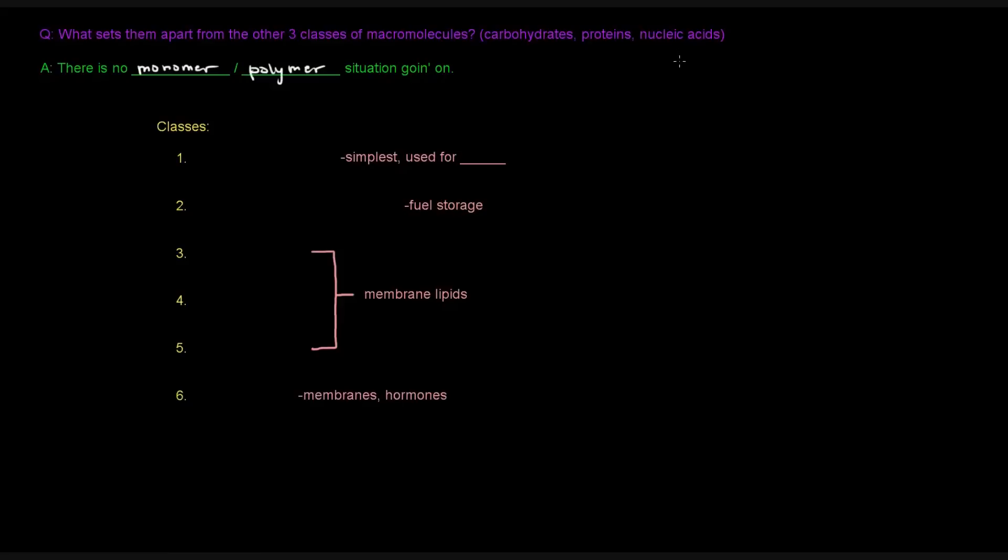So, what's going on with lipids? Well, lipids don't actually have that sort of situation going on. There aren't any polymer or polymeric units or monomeric units, as you'll see when we discuss the structures of these different classes.